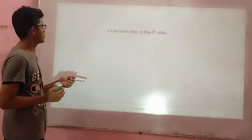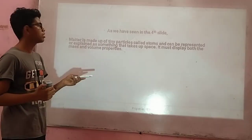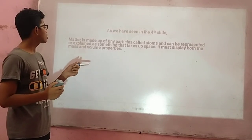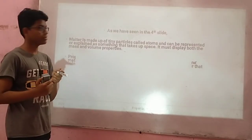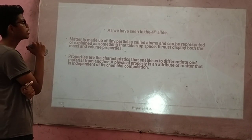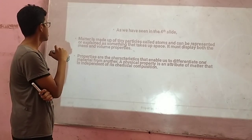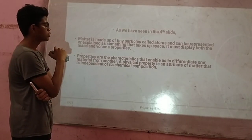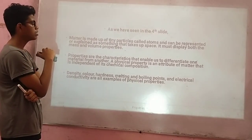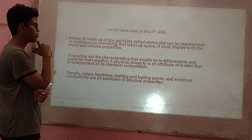As we have seen in the fourth slide, matter is made up of tiny particles called atoms and can be described as something that takes up space, displaying both mass and volume properties. Properties are characteristics that enable us to differentiate one material from another. A physical property is an attribute of matter that is independent of its chemical composition. Density, color, hardness, melting and boiling points, and electrical conductivity are all examples of physical properties.